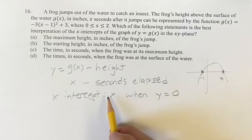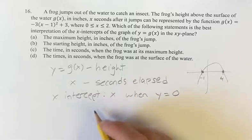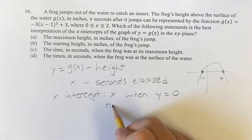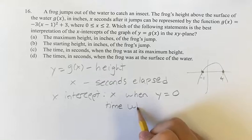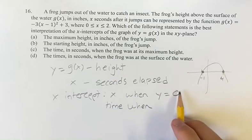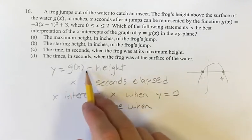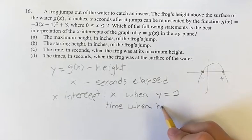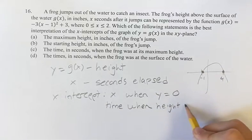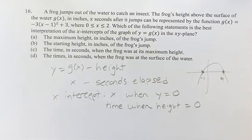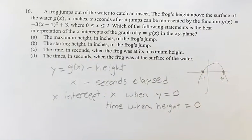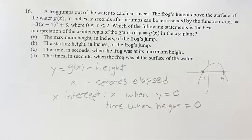So what does x when y equals 0 mean here? X is the seconds elapsed — the time. When y is equal to 0, also known as g of x equal to 0, the height is 0. The height above the surface of the water being 0 means the frog is at the surface — it's 0 inches above the water.